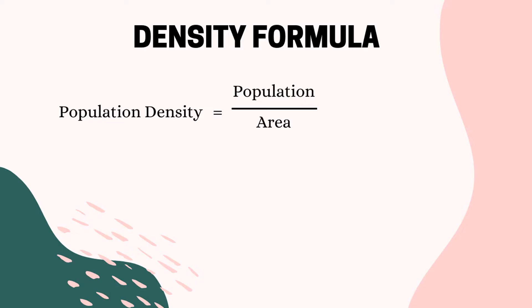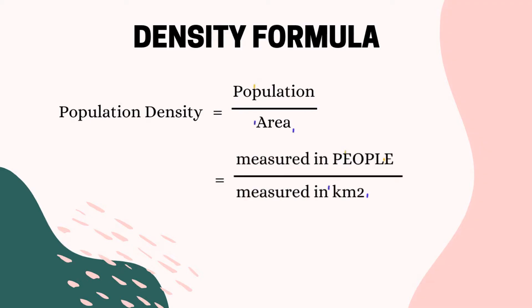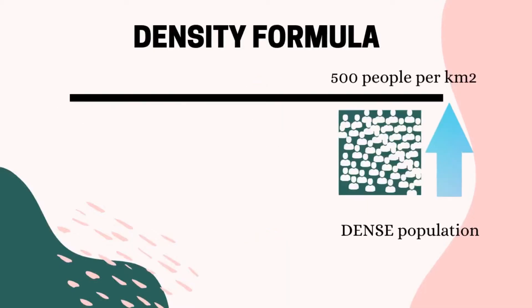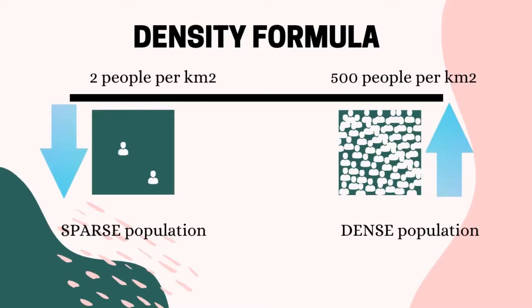There is a calculation that goes along with population density, and it looks like this: population density equals the total population divided by the area, and the unit will be people per square kilometre. The higher the number, the more dense the population will be; the lower the number, the more sparse the population will be.